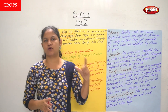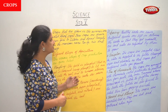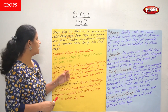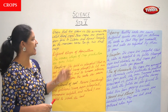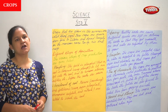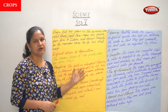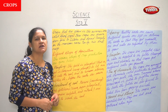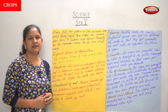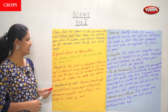Crops that are grown in summer are called kharif crops. These crops are grown from June to October and they depend largely on the monsoon rains. Examples are rice and maize.